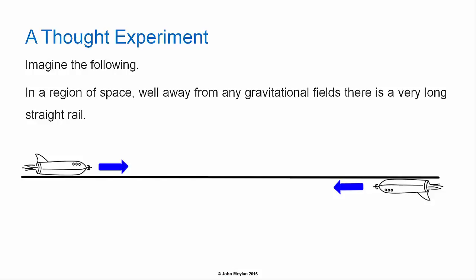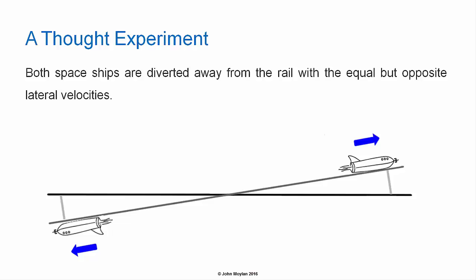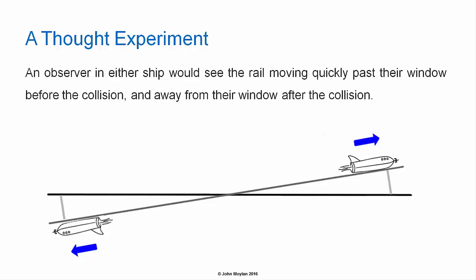A thought experiment: imagine the following. In a region of space well away from any gravitational fields, there is a very long straight rail. Two identical spaceships with equal and opposite velocities of 0.6 c fly along the rail and undergo a glancing elastic collision. After the collision, both spaceships are diverted away from the rail with equal but opposite lateral velocities.